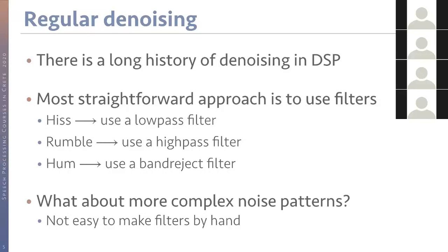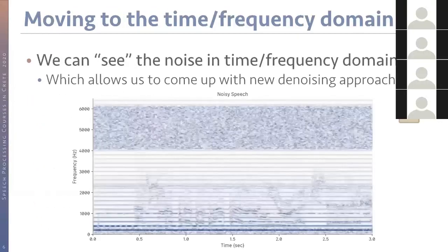Historically, one way to approach this problem was simple filtering. For example, if you have a lot of hiss in your recording, you apply a low-pass filter. If there's rumble, you apply a high-pass filter. If there's a humming sound, you design a band-reject filter for that particular band. But when you have more complicated noise patterns, you can't make filters by hand. So we move to the frequency domain instead.